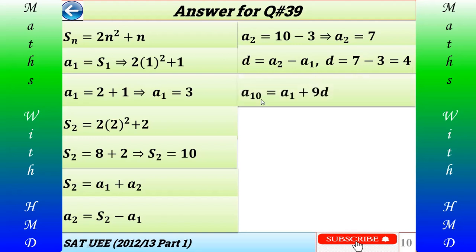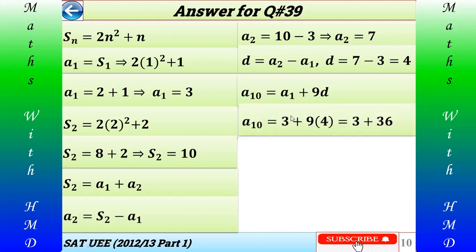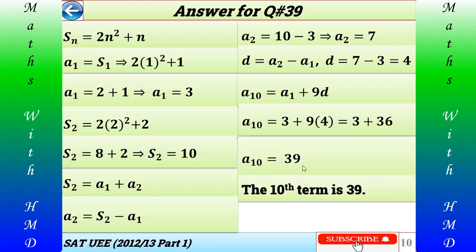Using the general formula a(n) = a1 + (n-1) × d, we get a(10) = a1 + 9d = 3 + 9 × 4 = 3 + 36 = 39. So the 10th term of this arithmetic sequence is 39, and the answer is A.